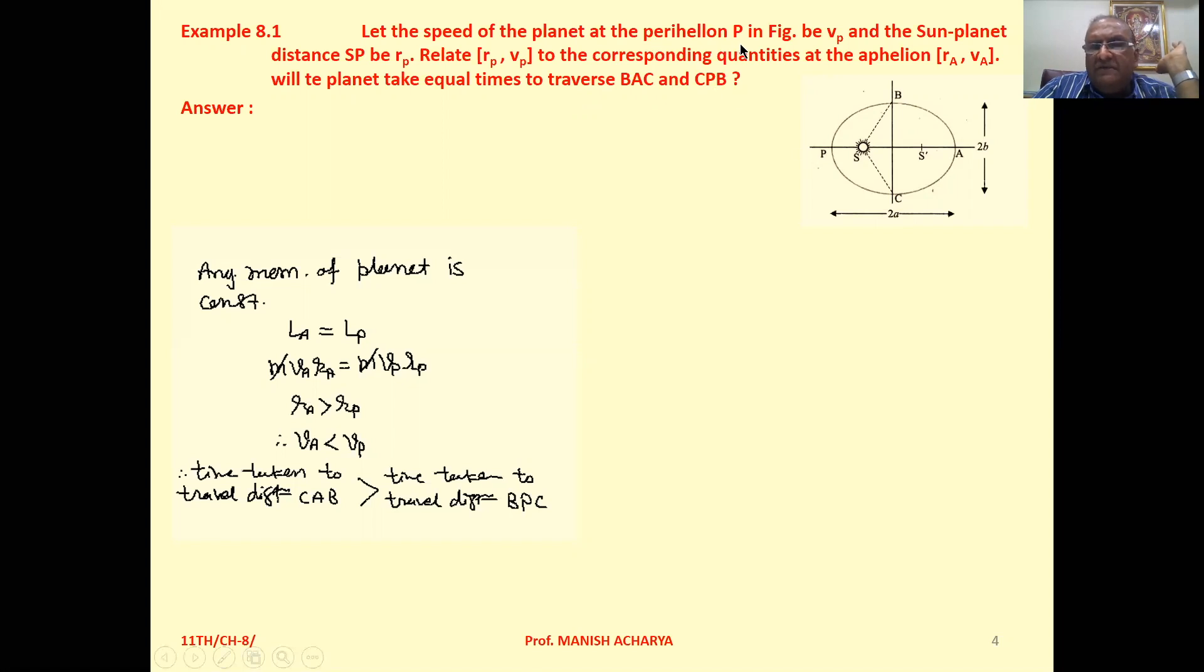Perihelion P is the shortest distance of the planet from the Sun, the closest point to the foci on the semi-major axis. And aphelion is the furthest point on the major axis from the foci. So the Sun's position is here, P position is perihelion, A position is called aphelion.